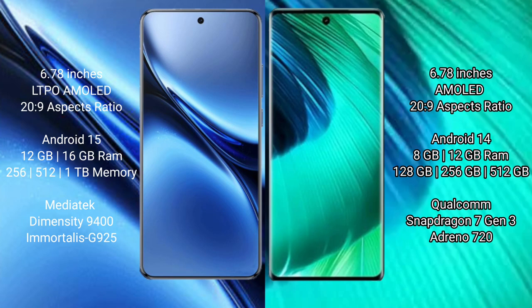Vivo X200 Pro comes with 12GB or 16GB RAM and 256GB, 512GB, or 1TB internal storage, powered by a MediaTek Dimensity 9400 processor with Mali-G925 GPU. Vivo V30 comes with 8GB or 12GB RAM and 128GB, 256GB, or 512GB internal storage, powered by a Qualcomm Snapdragon 7 Gen 3 processor with Adreno 720 GPU.